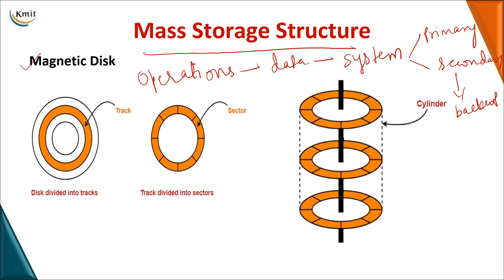The first topic dealt in mass storage structure is about the magnetic disk. Looking at the internal structure of a magnetic disk, the disks are divided into tracks — the circular partitions around the disk are known as tracks. A track is further divided into parts, and each part of a track is called a sector. All these disks are stacked one after the other at the same radius, and this combination is called a cylinder.